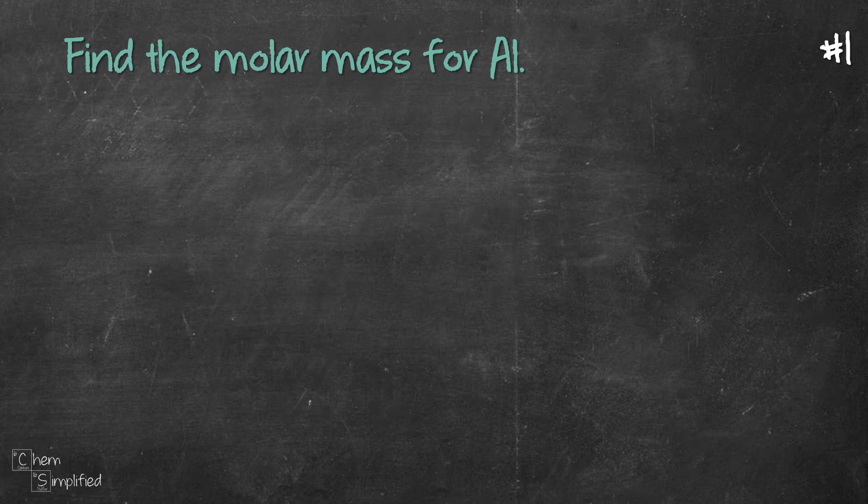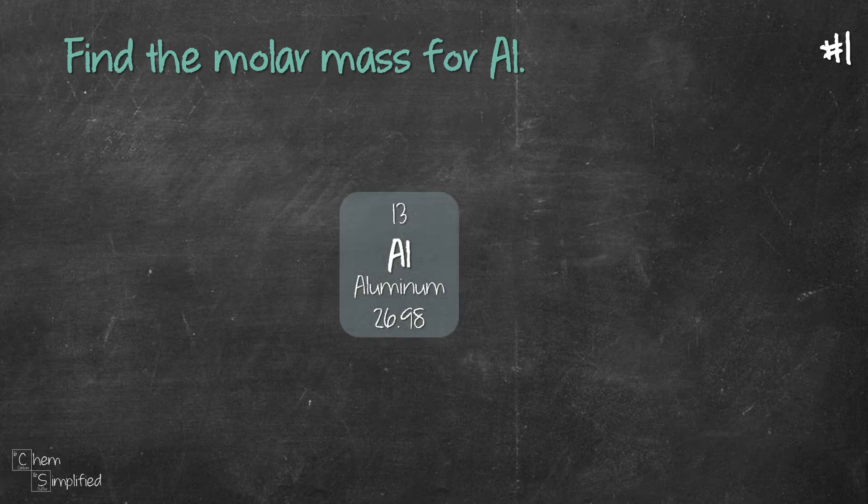Let's start with something simple. Let's find the molar mass for Al, which is aluminum. If we look for Al in the periodic table, this is what we get.